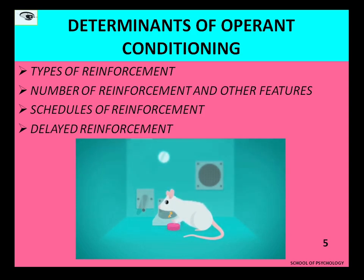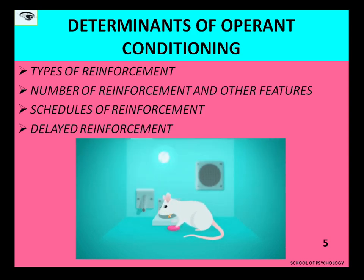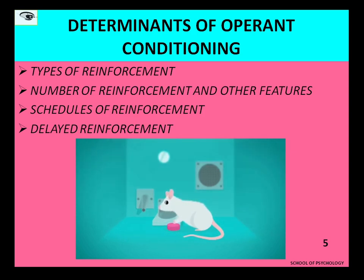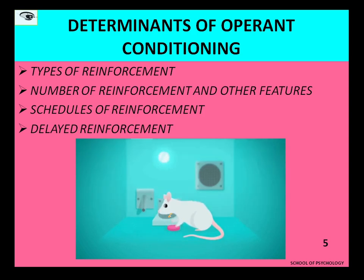Another example: when driving, seeing traffic police being vigilant, we become cautious because we don't want to be fined or charged money. To avoid that, we respond by following all traffic rules — wearing the seat belt, not breaking any rules, following traffic lights. This is how we differentiate between punishment and negative reinforcement.